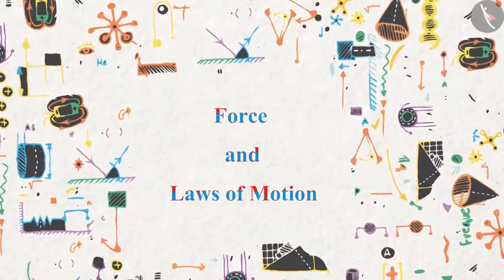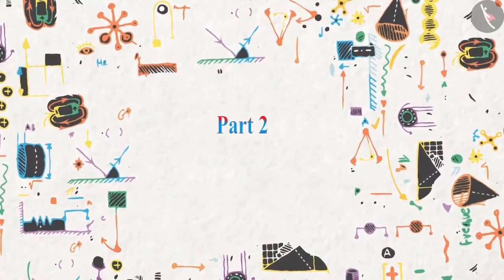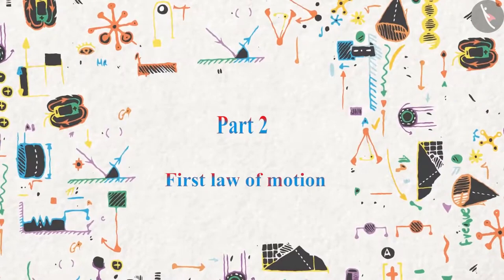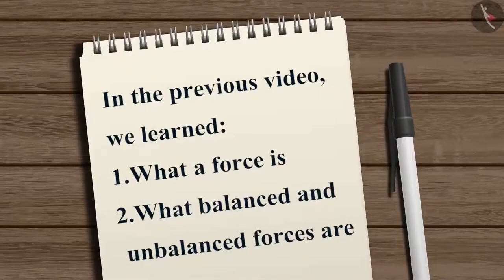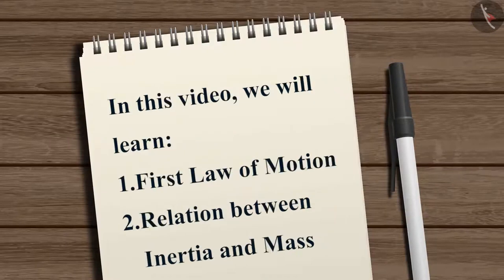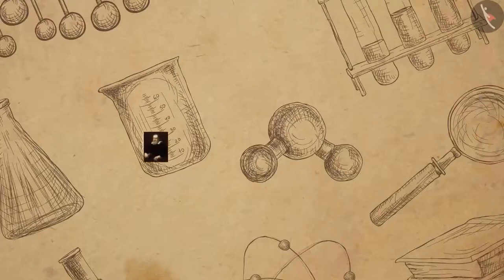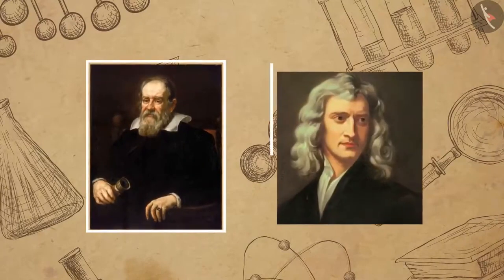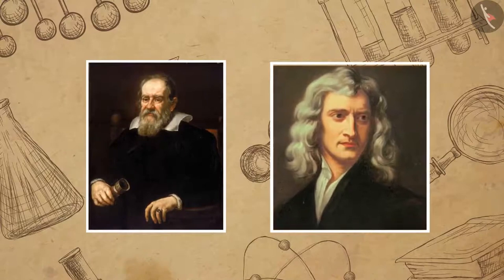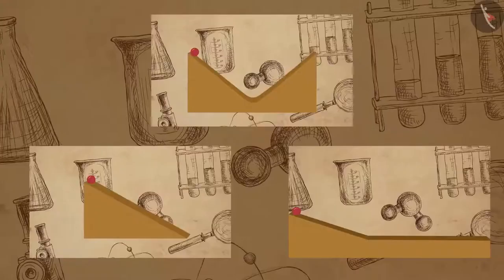Force and laws of motion, part two: first law of motion. In the previous video we learned what forces are and what balanced and unbalanced forces are. In this video we will learn about the first law of motion and see the relation between inertia and mass. To understand how the first law of motion came to be, let us first look at the experiments conducted by Galileo Galilei.